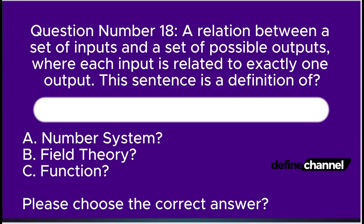Question number eighteen. A relation between a set of inputs and a set of possible outputs, where each input is related to exactly one output. This sentence is a definition of: A. Number system, B. Field theory, C. Function. Please choose the correct answer.